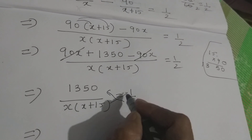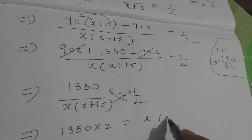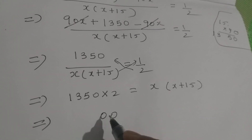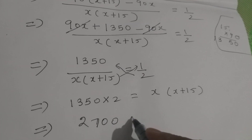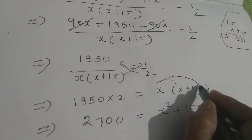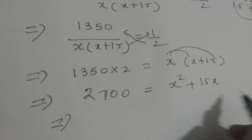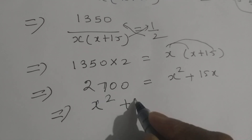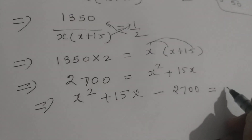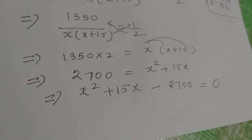Now, again cross multiply: 1350 × 2 = 1 × x(x+15). So 2700 = x(x+15), which gives x² + 15x. Taking everything to one side, we are getting the quadratic equation x² + 15x − 2700 = 0. We have to solve this using the quadratic formula because factorization is not possible here.